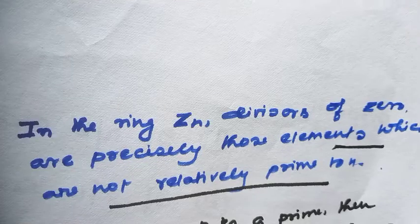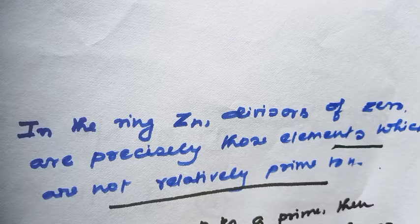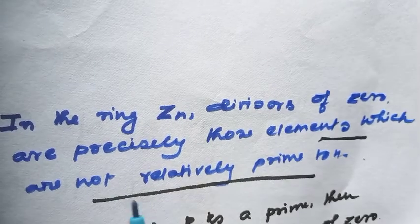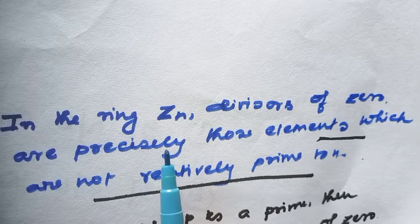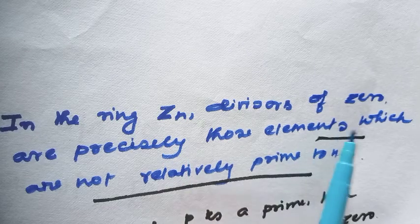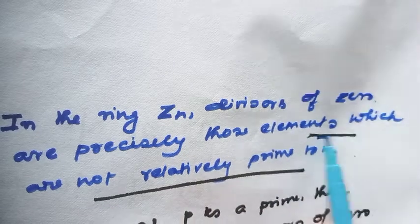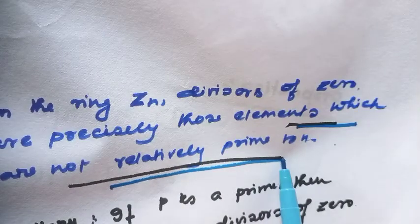In my earlier video I showed that the units of the ring Zn are those elements which are relatively prime to n. Now I will show what the zero divisors of Zn are. In the ring Zn, the divisors of zero are precisely those elements which are not relatively prime to n.